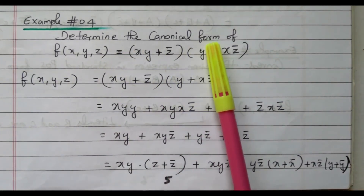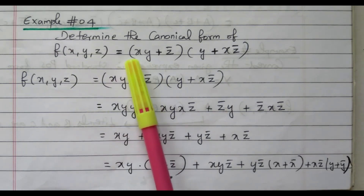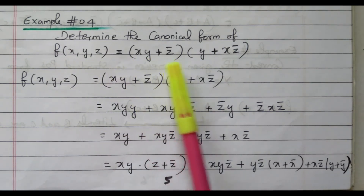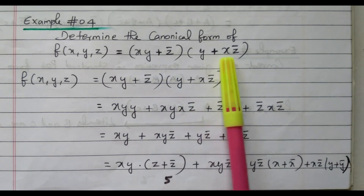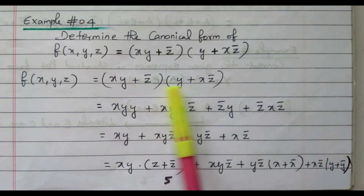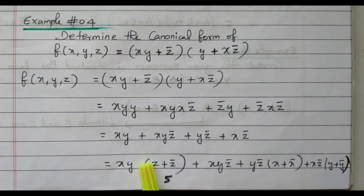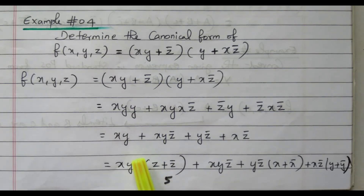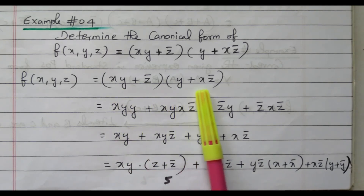Determine the canonical form, that is the standard form. F(X,Y,Z) = (XY + Z̄)(Y + XZ̄). This term is given. This is not a SOP form — it is available in POS form. So first we will multiply this to bring it into SOP form, and then we will bring it into standard SOP form.